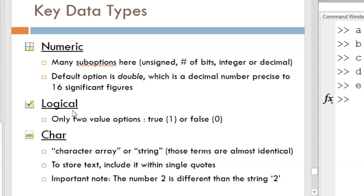Logical is the simplest data type of all. A logical variable can hold only one of two values, true or false. True is represented with a 1 and false with a 0. Last on this list is the character data type, abbreviated to char.